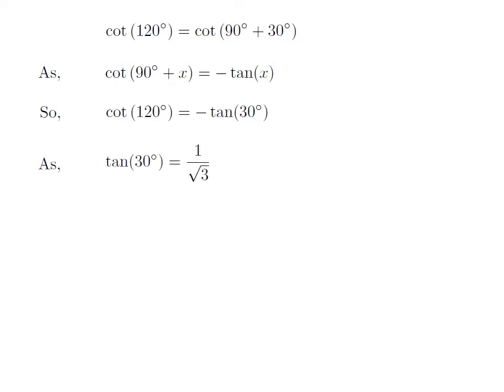We know the value of tangent of 30 degree is equal to 1 upon square root of 3. So, cotangent of 120 degree is equal to minus 1 upon square root of 3.